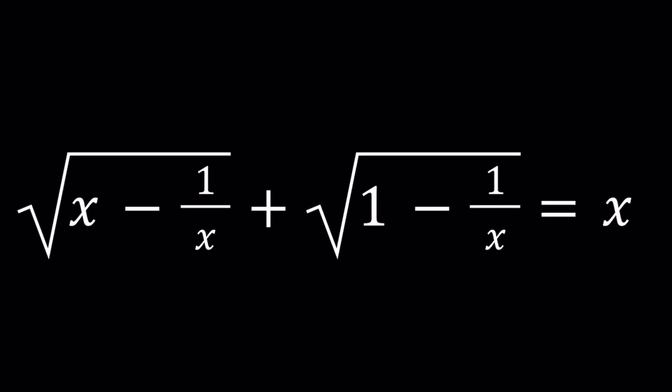Hello everyone. In this video we're going to be solving a radical equation. We have square root of x minus 1 over x plus the square root of 1 minus 1 over x equals x, and we're going to be solving for x values.